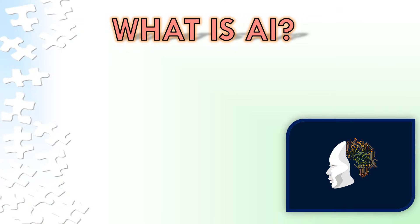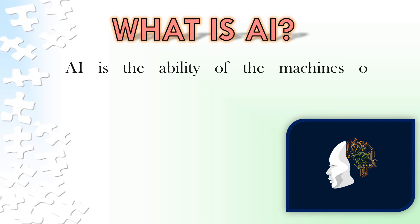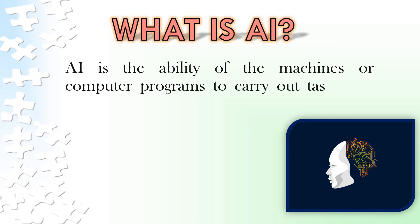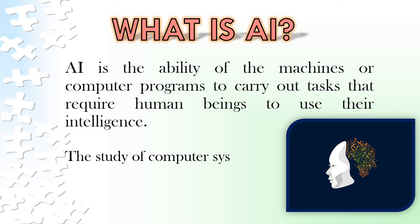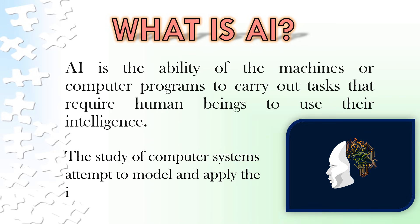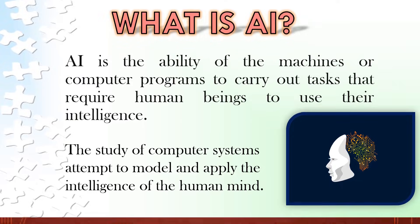What is AI? AI is the ability of machines or computer programs to carry out tasks that require human beings to use their intelligence. The study of computer systems attempts to model and apply the intelligence of the human mind.